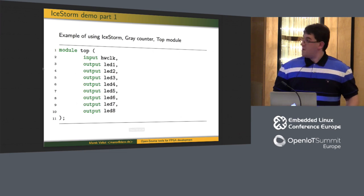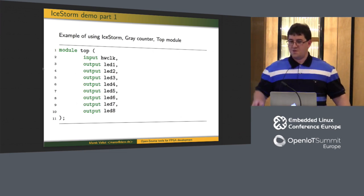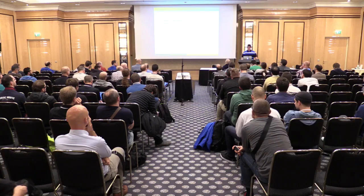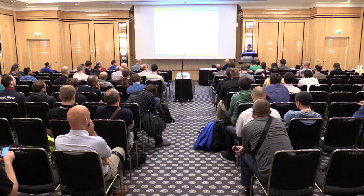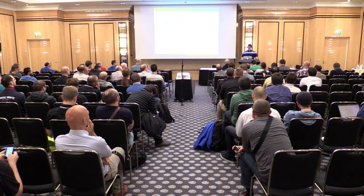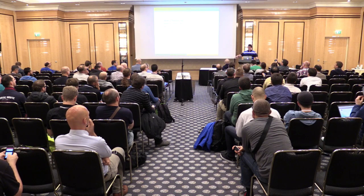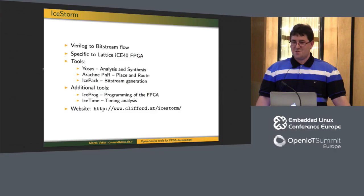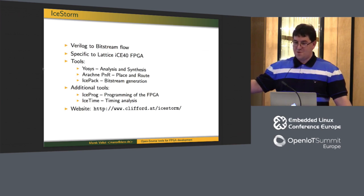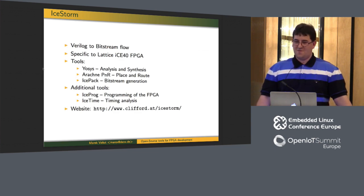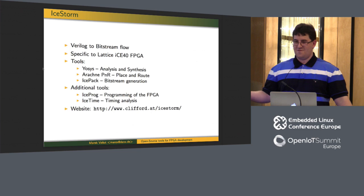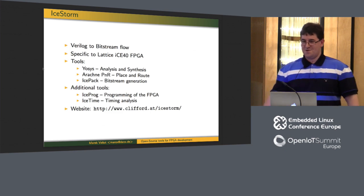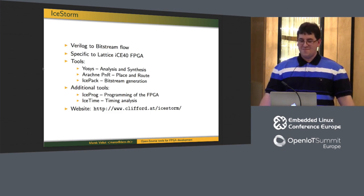The only things missing from an open source toolchain for any other FPGA are: a model for VPR (for place and route) and the assembler. The analysis and synthesis tools are available, the framework for place and route is available but lacks the FPGA model, and the assembler is not available. If these became available, we would have an open source toolchain with state-of-the-art place and route algorithms for pretty much any FPGA.